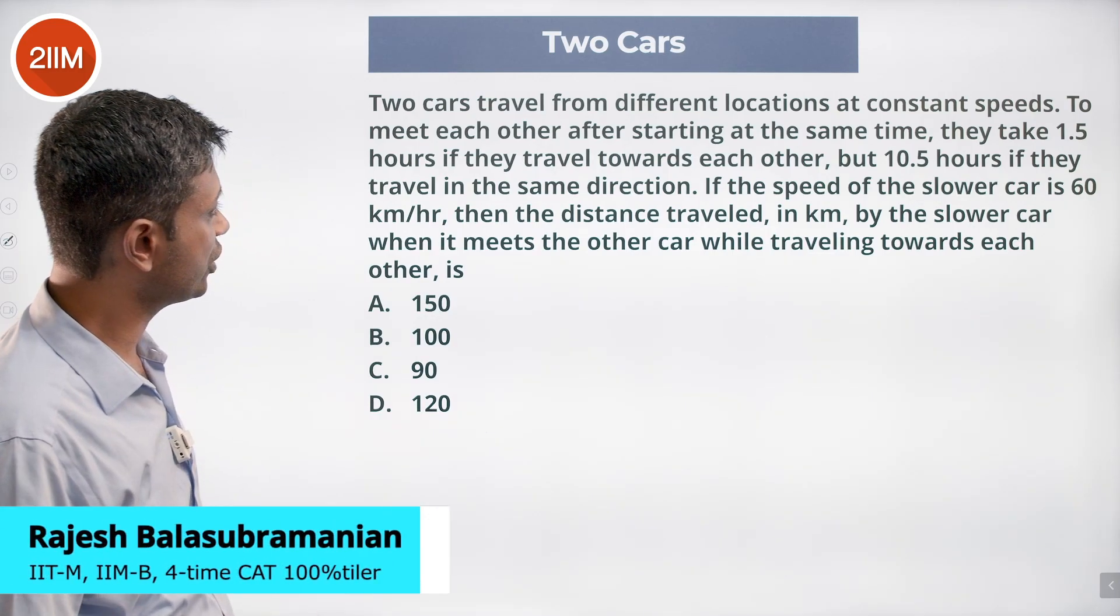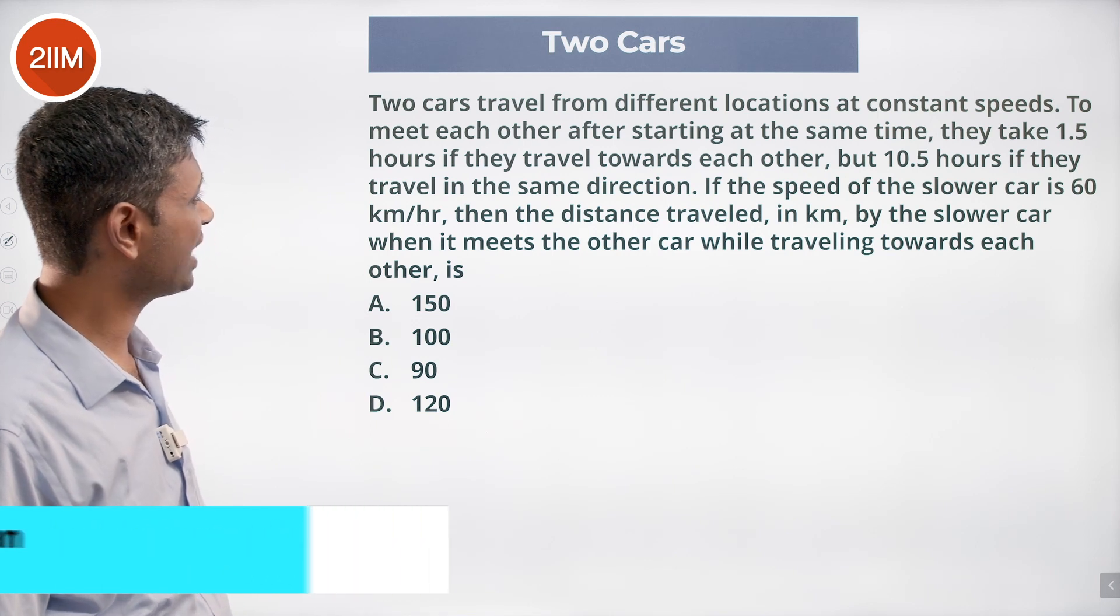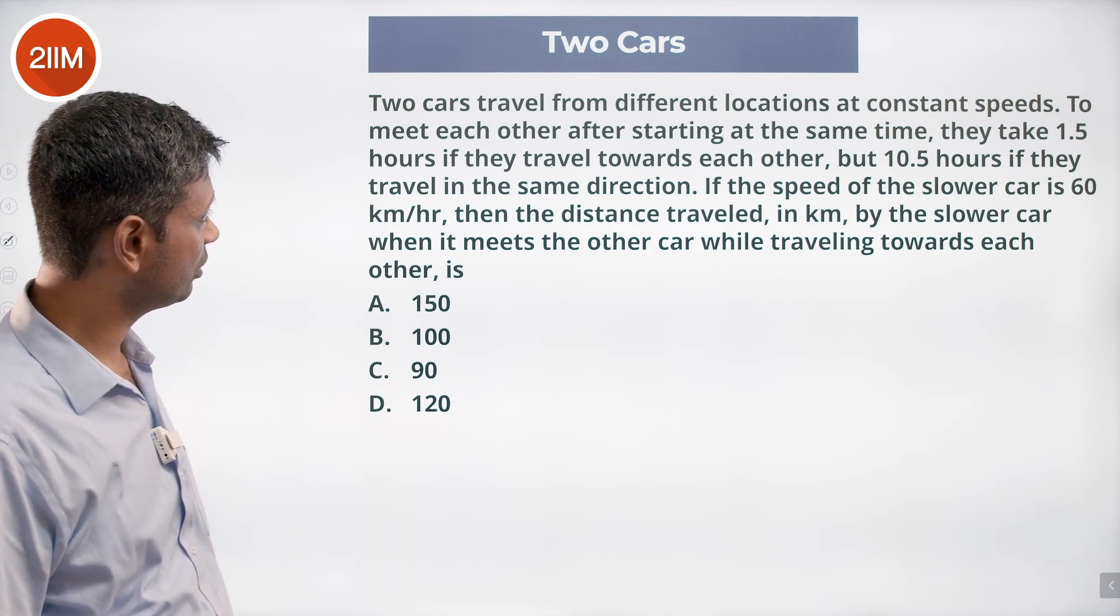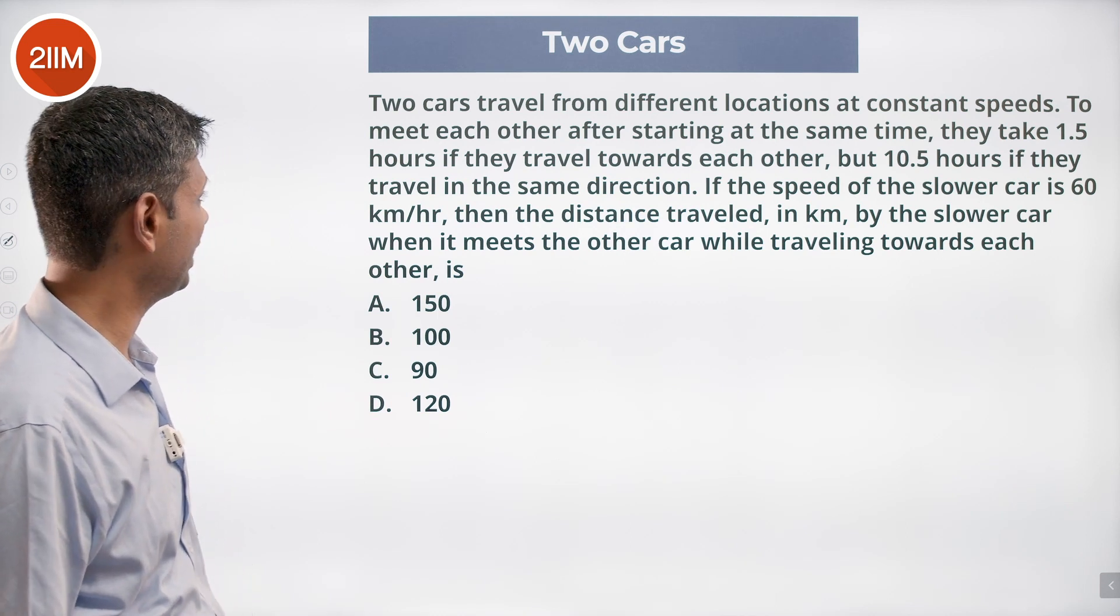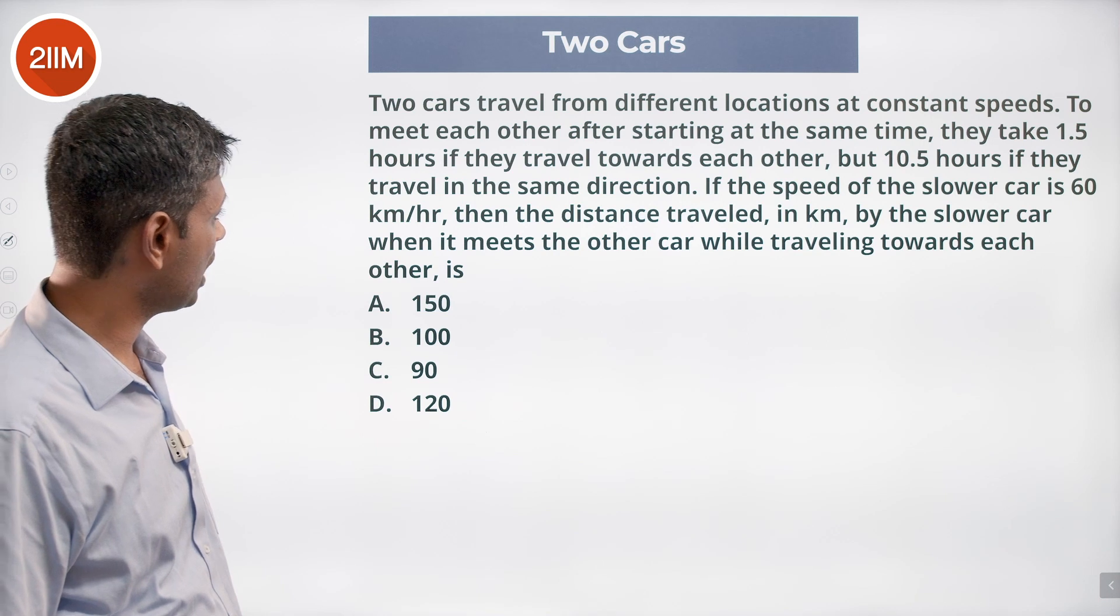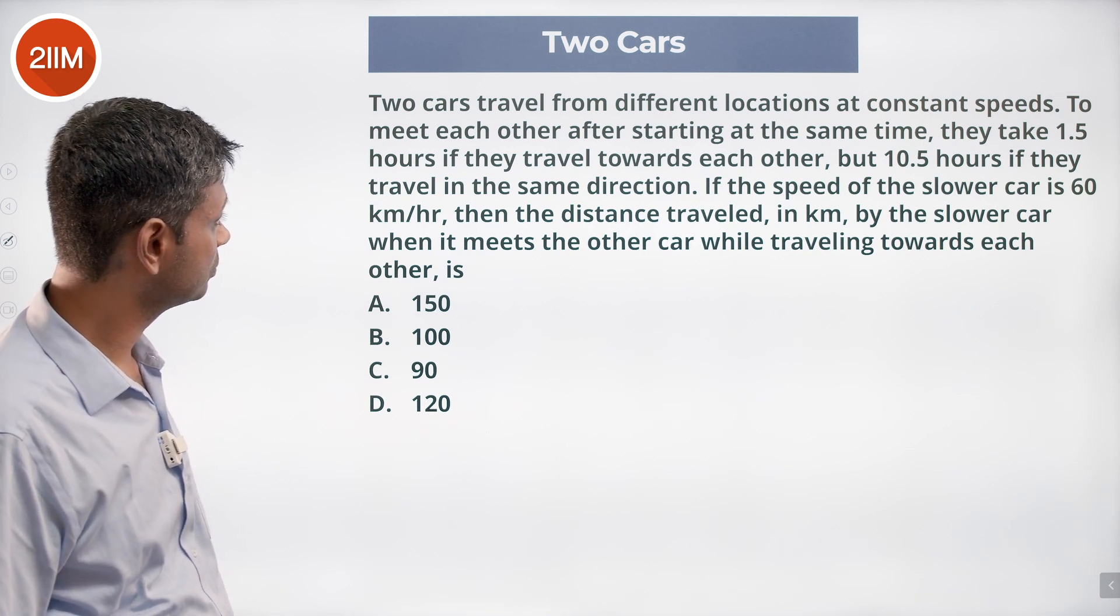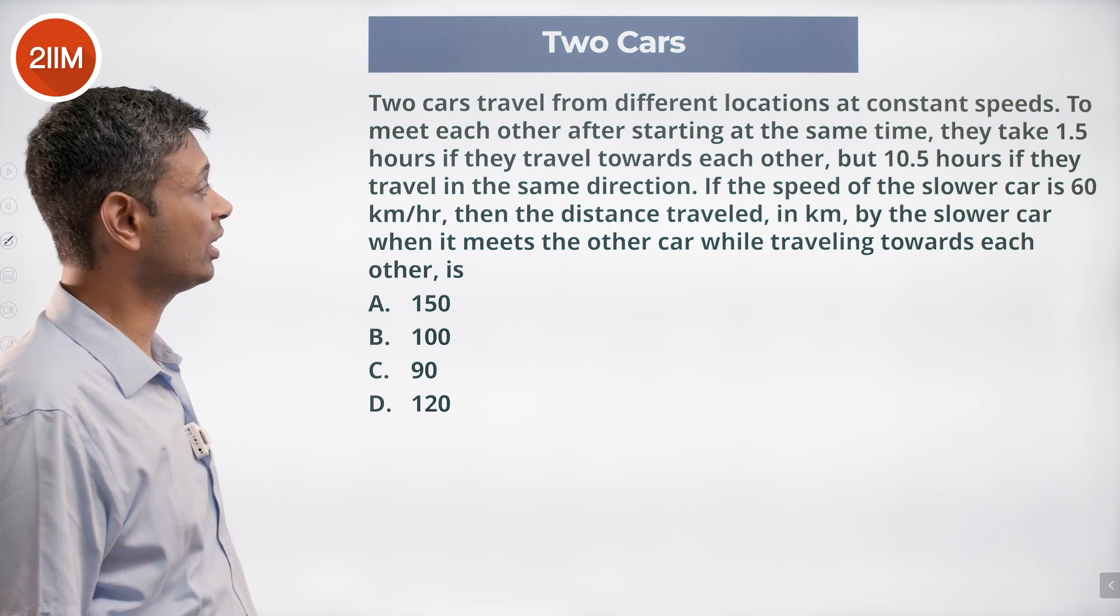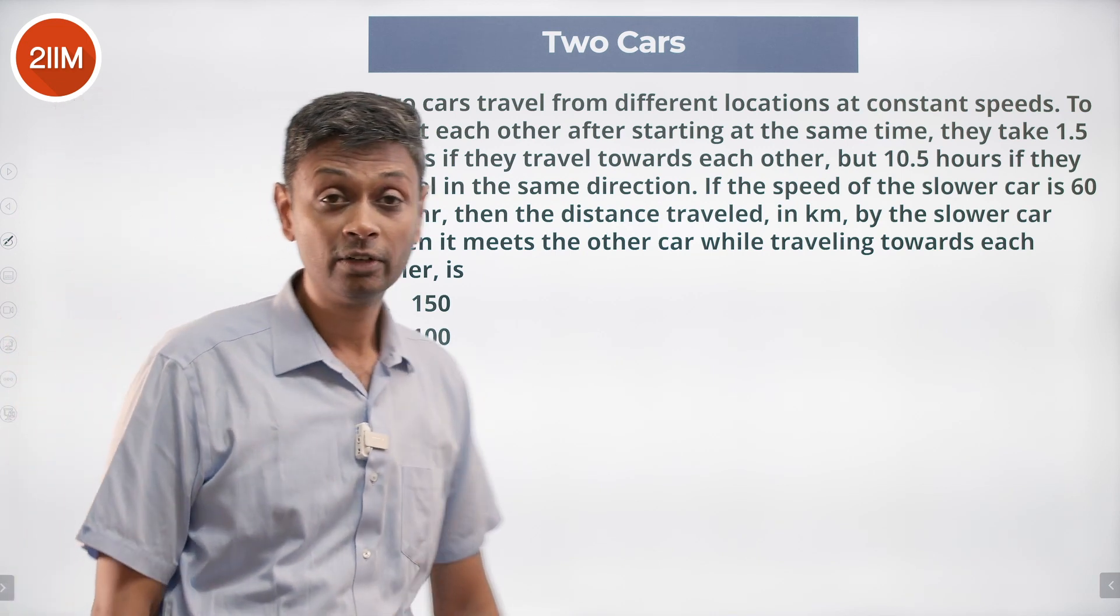Two cars travel from different locations at constant speeds to meet each other after starting at the same time. They take 1.5 hours if they travel towards each other and 10.5 hours if they travel in the same direction. If the speed of the slower car is 60 kilometers per hour, then the distance traveled in kilometers by the slower car when it meets the other car while traveling towards each other. I had to look at this question like twice over, thrice over.